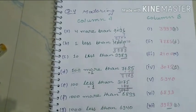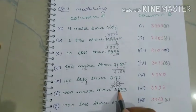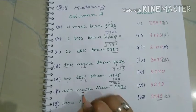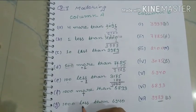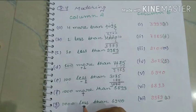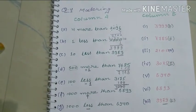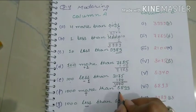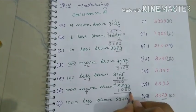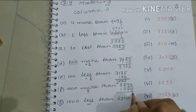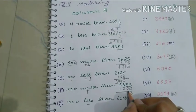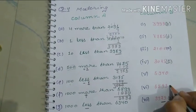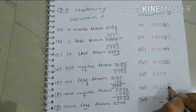Next: 1000 more than 5893. Since more means we add, we add 1000 to 5893. The thousands digit 5 plus 1 equals 6, giving us 6893. This matches answer F.